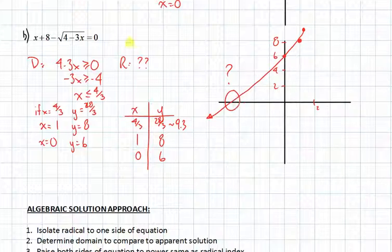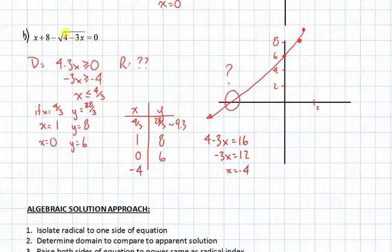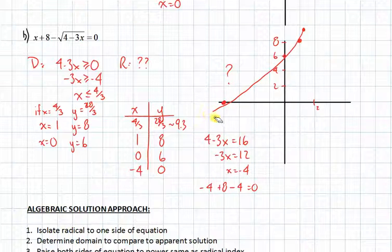What I can do is this. I know I want to choose some x values whose result in the radicand can be evaluated easily. For example, how can I make 4 - 3x equal to 16? Because the root of 16 can be determined. Well, that happens when x equals negative 4. So let's substitute negative 4 into the equation and see what happens. If I put negative 4 in here, I get 16 in the radicand. The root of 16 is 4. I'm also putting negative 4 here. So I have -4 + 8 - 4, which is going to be 0. So I actually was very close in my estimation. 1, 2, 3, 4 units back right here is where my 0 is.